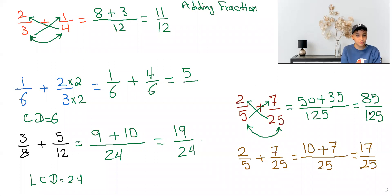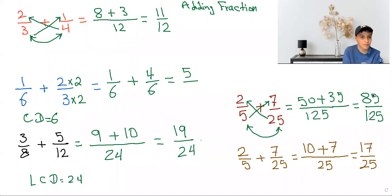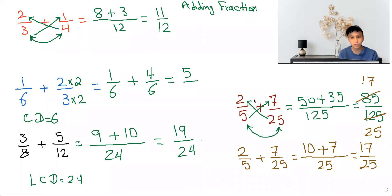So are these two answers the same? We can't reduce this fraction, but we can reduce that one. Top and bottom, reduce by 5. 85 divided by 5 will give you 17, and 125 divided by 5 will give you 25. In the first method, we didn't choose the lowest common denominator, so we had to reduce. So I highly recommend the third method. This is my first video, so please like, comment, and subscribe, and I'll see you on my next video. Thanks for watching, and peace out.